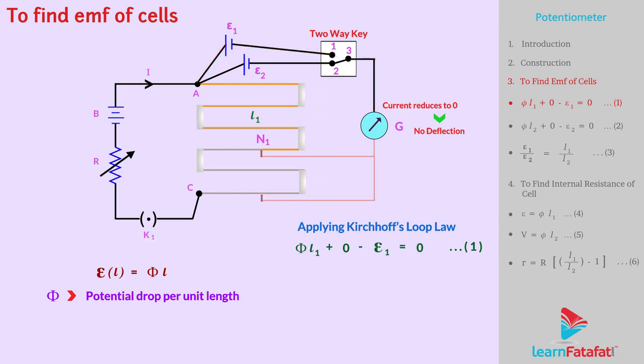Similarly, if points 2 and 3 are connected, we get N₂ point where galvanometer reading is zero. So, again using Kirchhoff's loop law for loop A-N₂-G-3-2-A, we get φl₂ + 0 - ε₂ = 0. Let's call this as equation number 2.